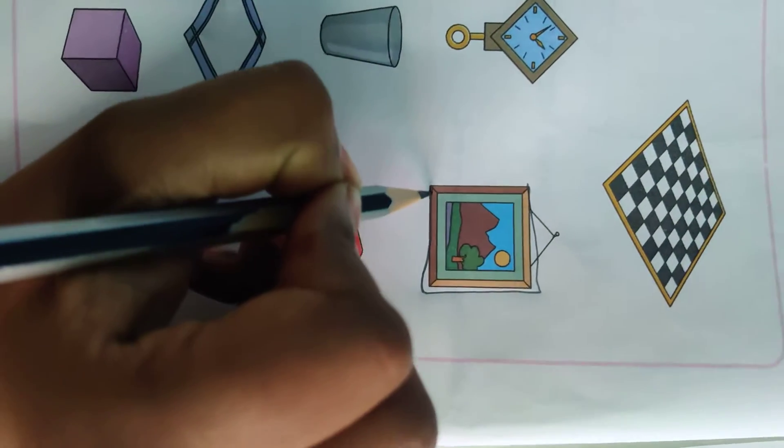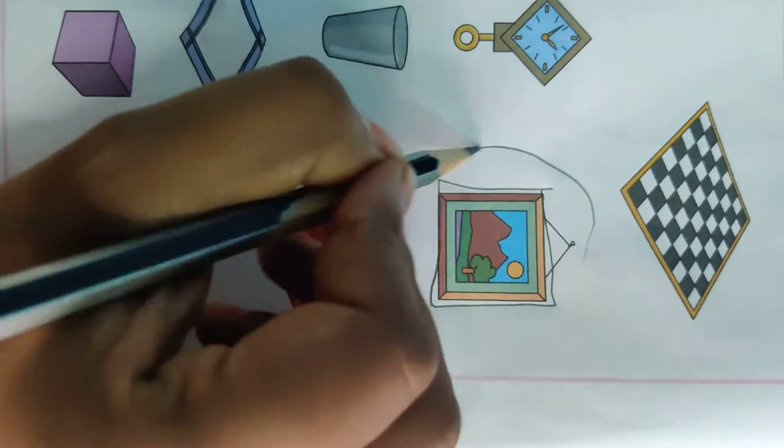See? Four sides equal. So you have to circle this. Square.